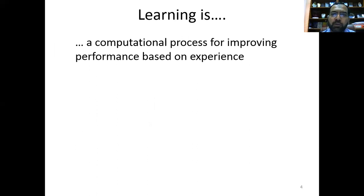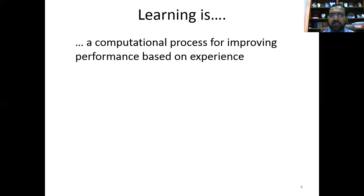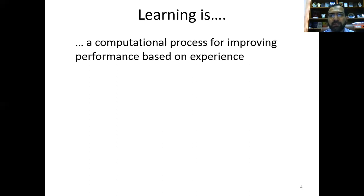We can define machine learning as a computational process for improving performance based on experience. It is a computational process because we have to compute, calculate, and evaluate various parameters based on certain principles — checking correctness, calculating cumulative values, and calculating performance parameters. Whatever method we apply, the purpose is to improve performance, and when we improve performance based on experience, that process helps us make machines which can perform tasks even better than humans.